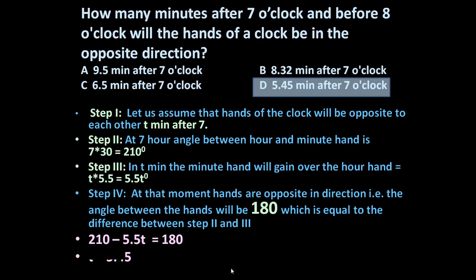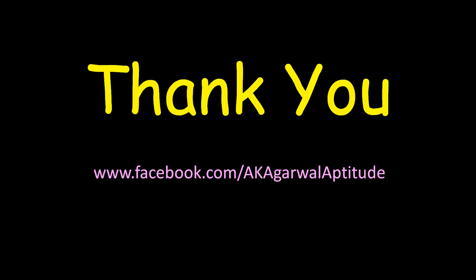Solving this equation, we get t equals 5.45. So 5.45 minutes after 7 o'clock, both hands will be exactly opposite to each other. Thank you very much friends for watching this video. You can also follow me on Facebook.